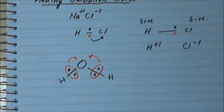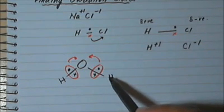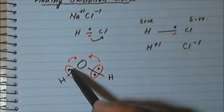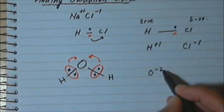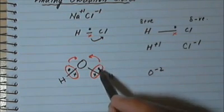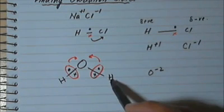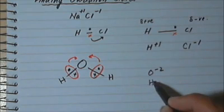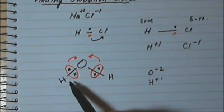So if we think of water as an ionic compound, oxygen is the one which has gained an electron from this hydrogen and also gained an electron from this hydrogen. So oxygen would be minus two, whereas each hydrogen has lost an electron — one of the electrons in each bonding pair was coming from that hydrogen. So each hydrogen would be plus one.